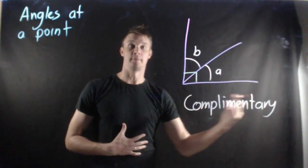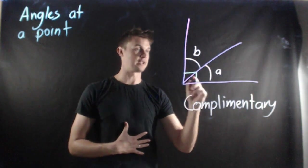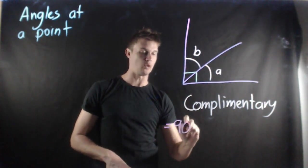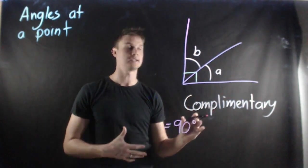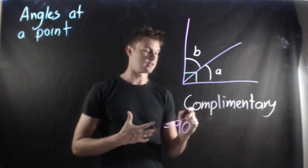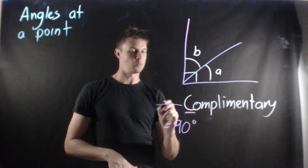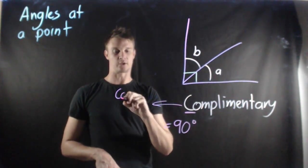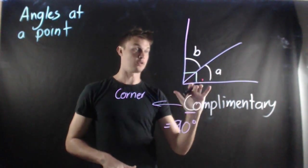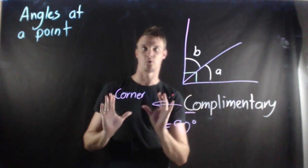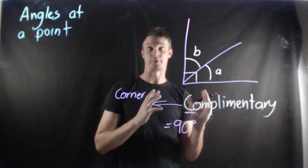Next we have what we call complementary angles. Now complementary angles, as you can see in this shape, they add up to 90 degrees. A good way to think of this is I like to use that complementary starts with C and we usually think of C as a corner. So if an angle has a corner, when we see this shape we know that's 90 degrees.